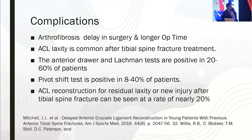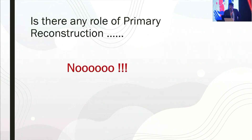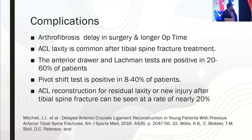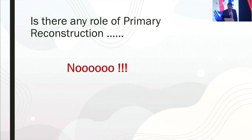Complications include arthrofibrosis, especially in arthroscopic surgery, and some ACL laxity. The anterior drawer test tends to be positive in about 20 to 60% of patients depending on the study, and the pivot shift test may be positive in a proportion of patients. About 20% of these patients will probably end up needing an ACL reconstruction. Looking at all the literature, there is no role for primary reconstruction in these injuries.